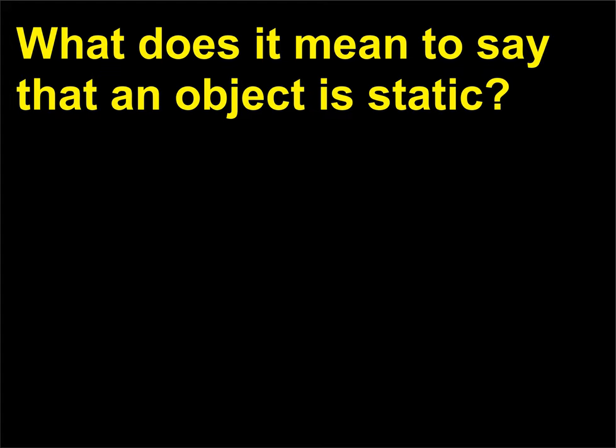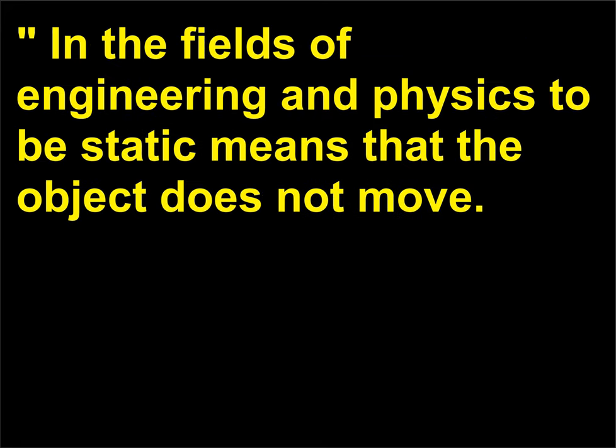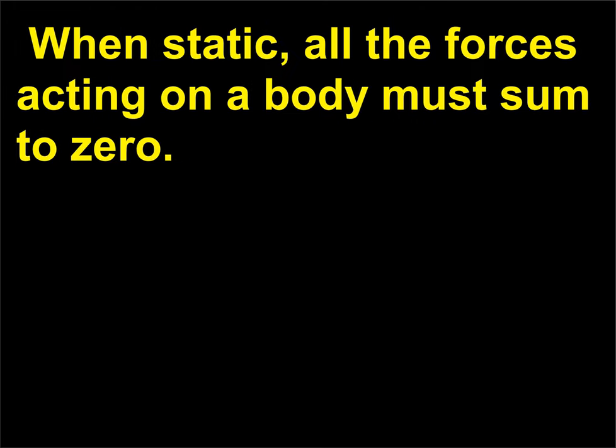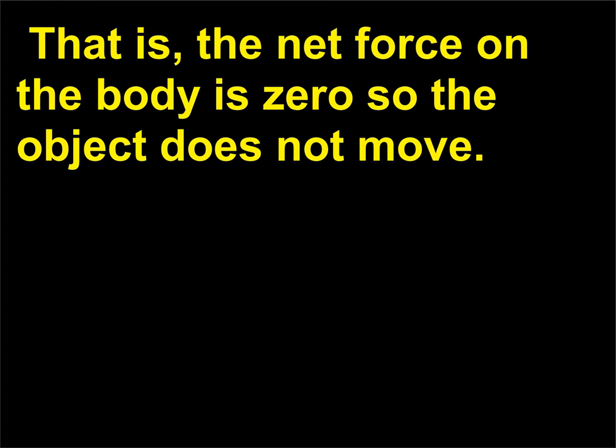What does it mean to say that an object is static? Static means not moving. In the fields of engineering and physics, to be static means that the object does not move. When static, all the forces acting on a body must sum to zero — that is, the net force on the body is zero so the object does not move.